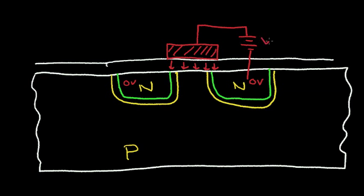As I increase this battery voltage, this electric field becomes stronger and stronger, and it pushes away holes that are in this P material. So, I develop a depletion region underneath this gate electrode. And if I increase this voltage further, an interesting thing takes place — the region under this gate electrode actually inverts and goes from a depletion region to an N-type region. The stronger the field, the more this inversion, and the more I drive down this depletion region.